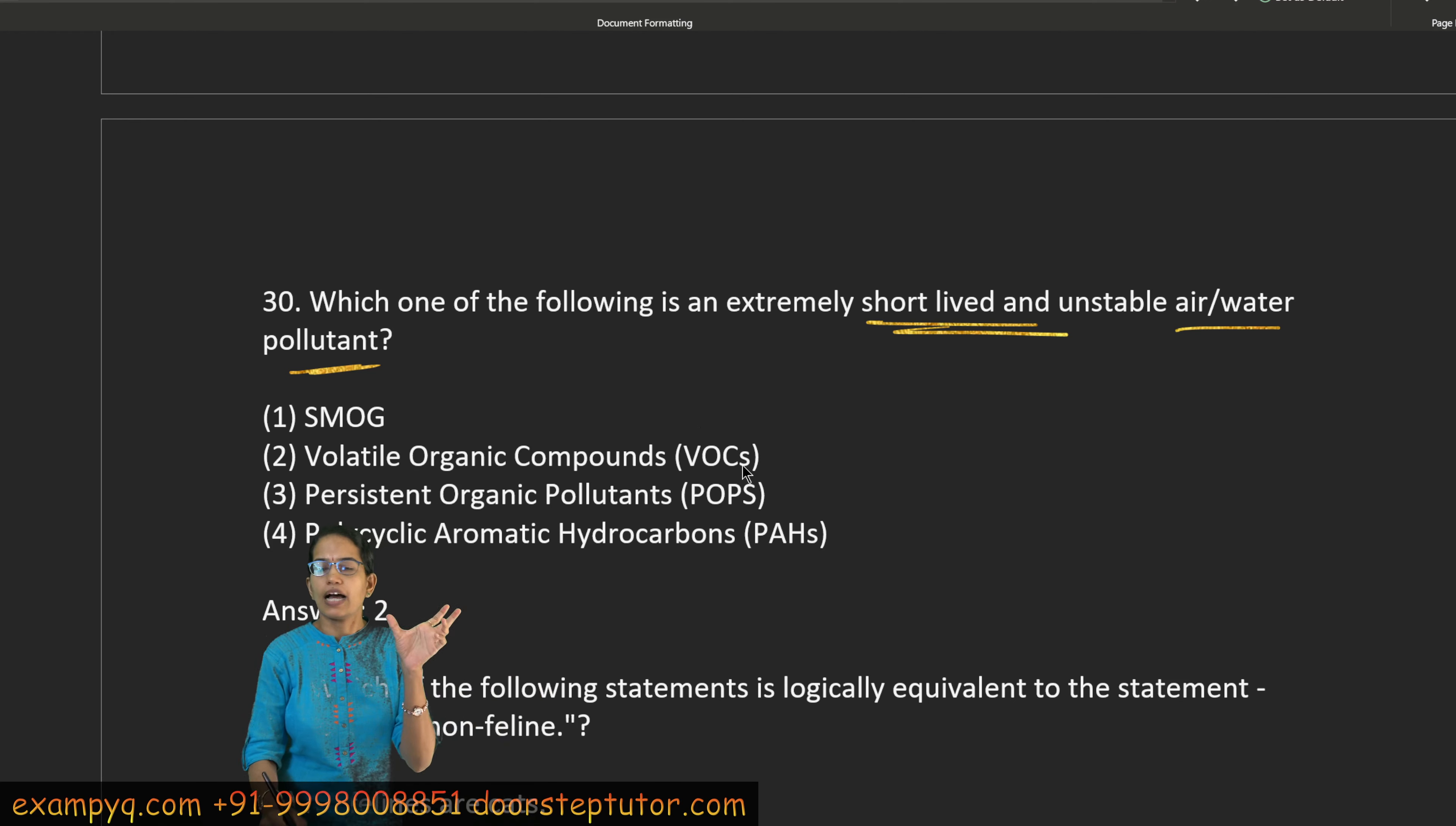The question is about which one of the following is an extremely short-lived and unstable air/water pollutant. Look, this is about persistence. Persistent pollutants will be there for a very long time, so POP is a wrong choice. PAH is a long time pollutant. And smog, we see that fog plus smoke, which is fog and smoke, we call it smog. And this smog has been found in the atmosphere for many days. In Delhi you will hear more news that the smog persists for a very long time. So now what is the answer? When nitric oxides and VOCs combine in the presence of sunlight, then the formation of smog occurs. So VOCs are extremely short-lived pollutants. So VOCs are right here.